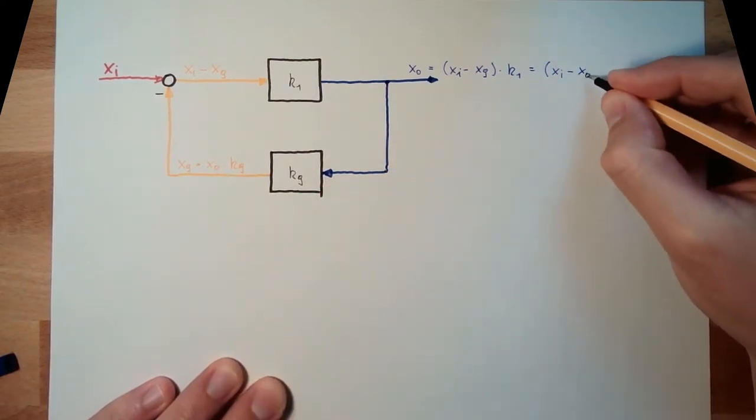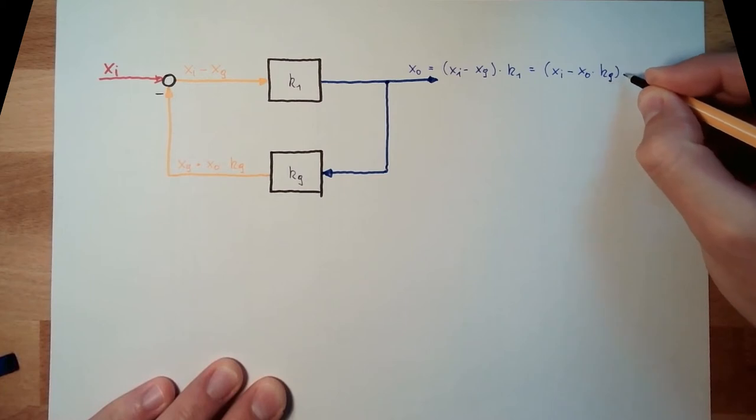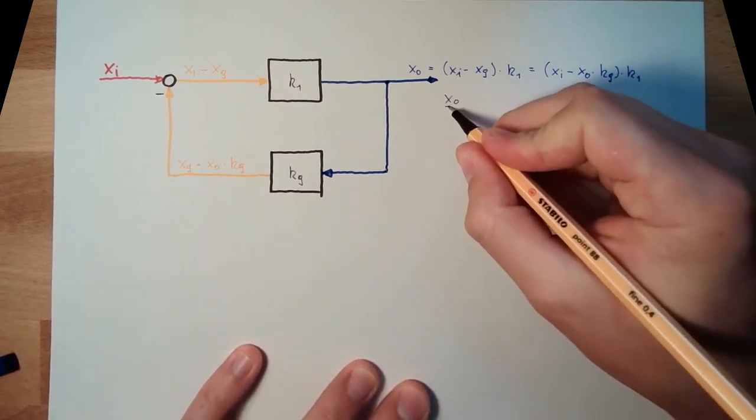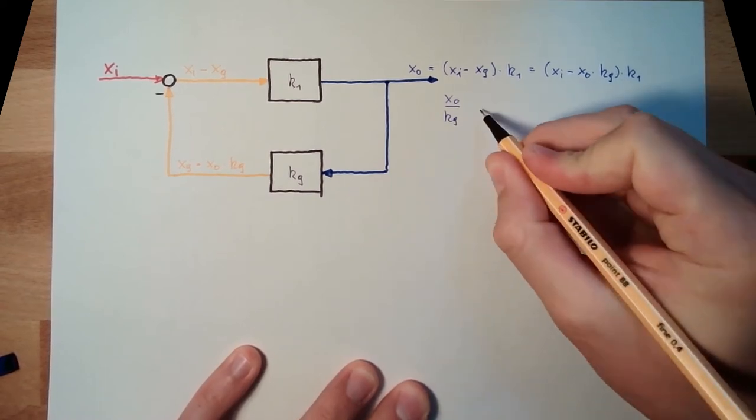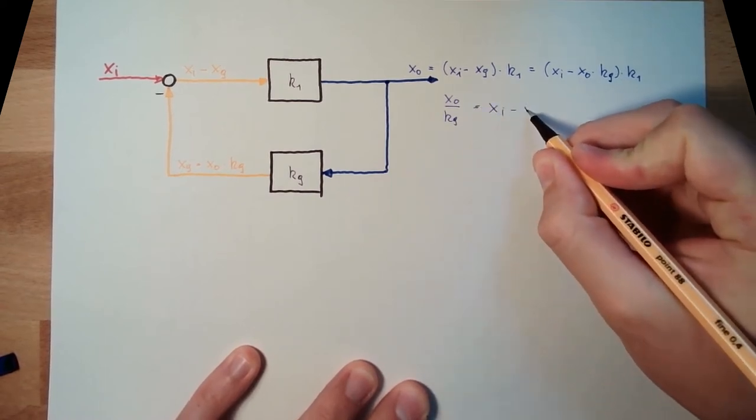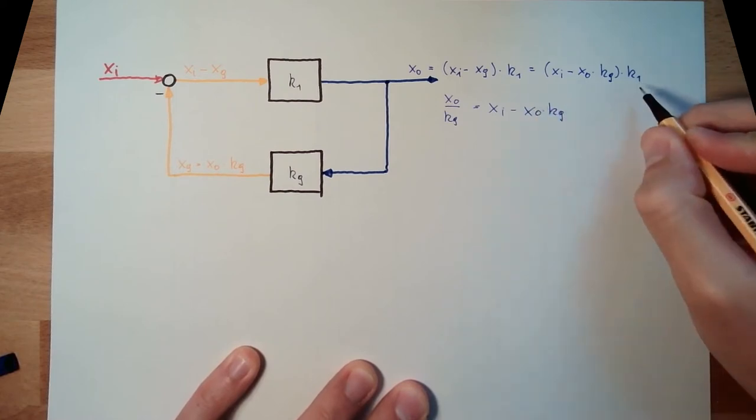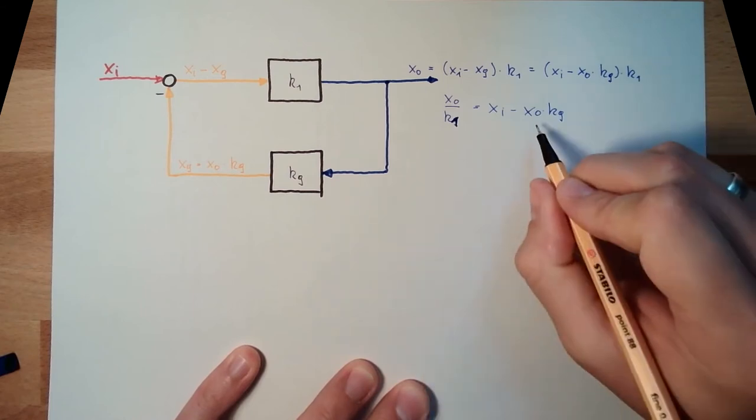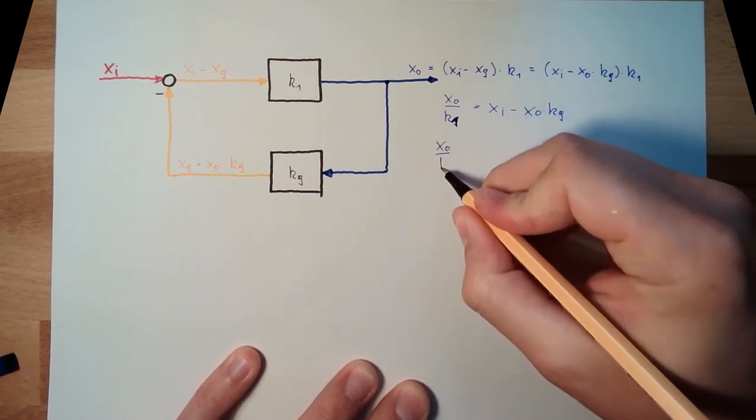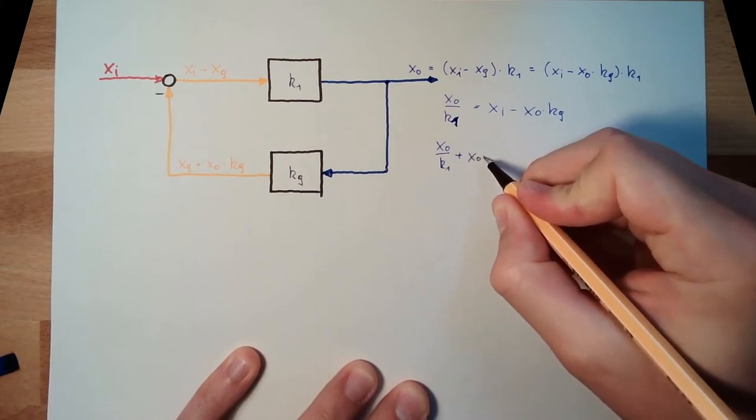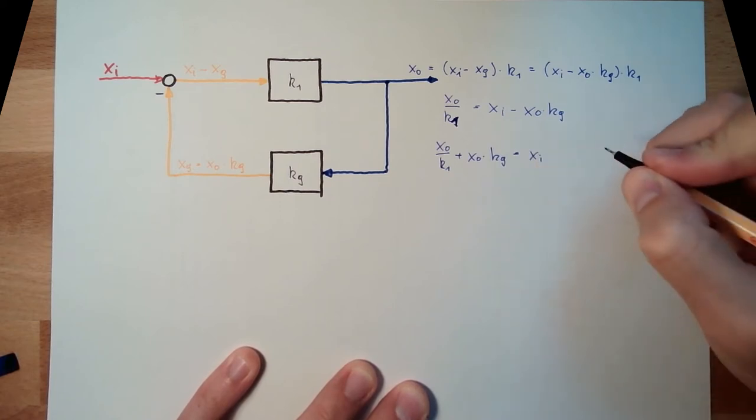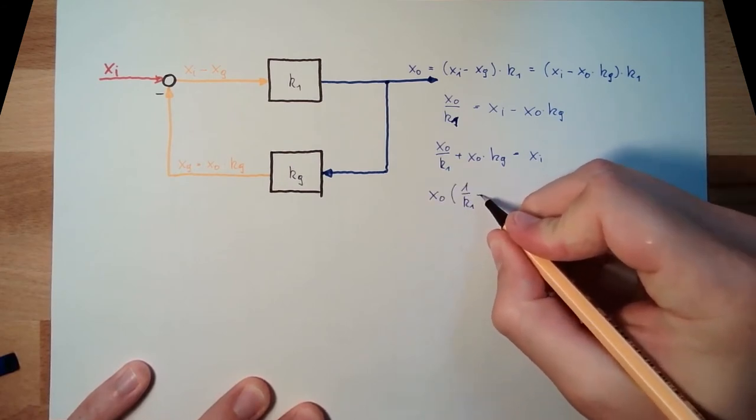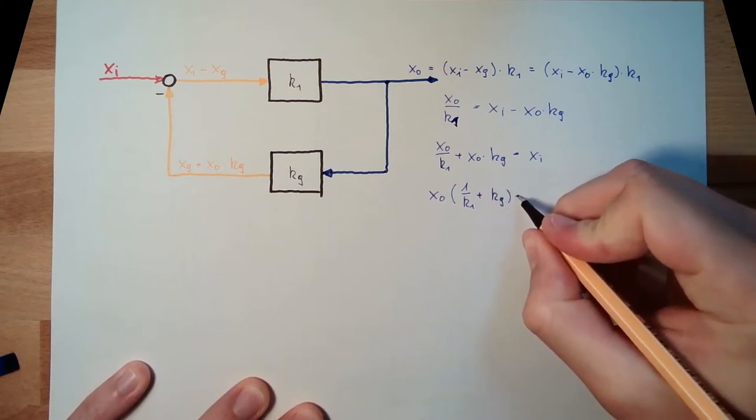Now, I have XO on both sides of the equation. So, I have to separate them. K1 on the other side of the equation. Now, I bring them also XO plus XO multiplied by KG is XI. So, XO divided by K1 plus KG is XI.